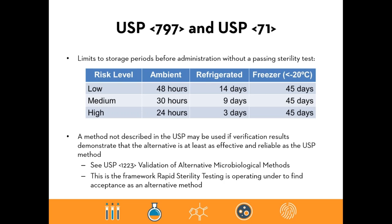This qualification table covers passing sterility test limits, storage periods before administration, and risk levels — low, medium, and high — with their definitions found in USP 797. Storage conditions and temperatures will also indicate when a sterility test must be administered. USP 797 also makes mention of the validation of alternative microbiological methods under USP chapter 1223. Later we'll talk about rapid sterility methods, which operate under that framework.